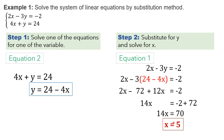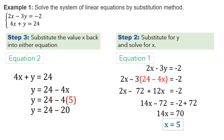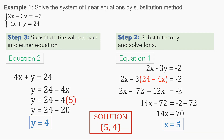Since we already have the value for x, we may solve for y. For step 3, substitute the value of x back into either equation. Since we solved for y in equation 2, we may just use that. The variable x equals 5 — substitute it in, removing x and changing it with 5. Simplify: 4 times 5 will give us 20. Combining it with 24: 24 minus 20 gives us positive 4. So, the value for y is equal to positive 4. Therefore, the solution of this system of linear equations is (5, 4).